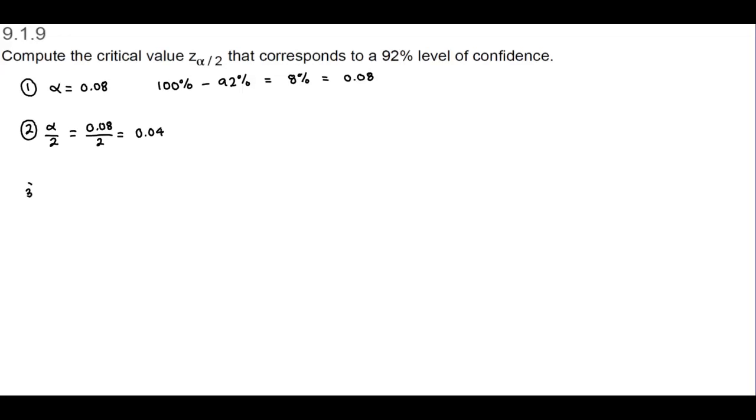We want to find Z alpha divided by 2, which is Z of 0.08 divided by 2, which is Z of 0.04. Whenever you see this, this says that this is the area to the right of the critical value of Z. So let's draw a picture so we can see what's happening here.